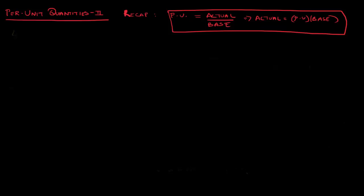Welcome to the second part in our discussion on per unit quantities. In the first video we defined what per unit quantities are. Remember this formula: per unit quantities are nothing but actual values divided by base values, and if you're given per unit values then you can calculate the actual value by multiplying it by that base value.